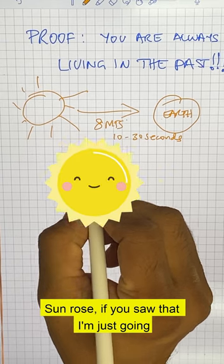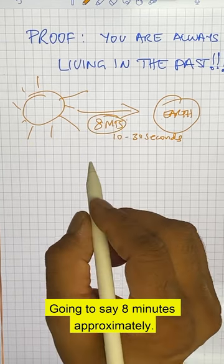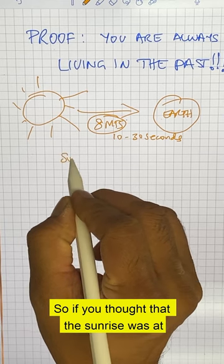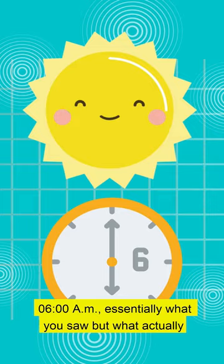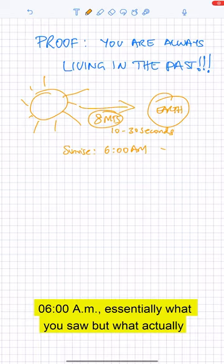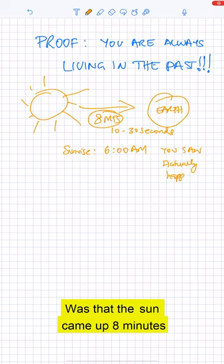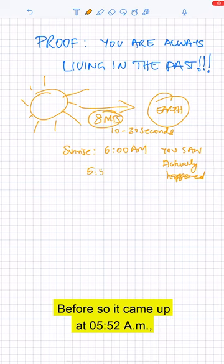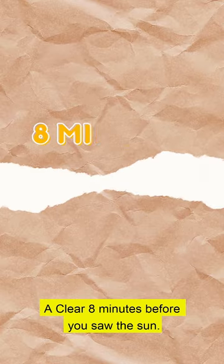I'm just going to for the purpose of this thing say eight minutes approximately. So if you thought that the sunrise was at 6 a.m., essentially what you saw, but what actually happened was that the sun came up eight minutes before. So it came up at 5:52 a.m., a clear eight minutes before you saw the sun.